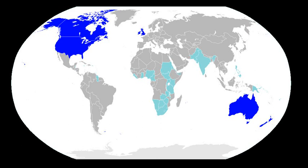General American and received pronunciation vary in their pronunciation of historical R after a vowel at the end of a syllable. GA is a rhotic dialect, meaning that it pronounces R at the end of a syllable, but RP is non-rhotic, meaning that it loses R in that position. There is complex dialectal variation in words with the open front and open back vowels. These four vowels are only distinguished in RP, Australian, New Zealand, and South African English. In GA, these vowels merge to three, and in Canadian English they merge to two.